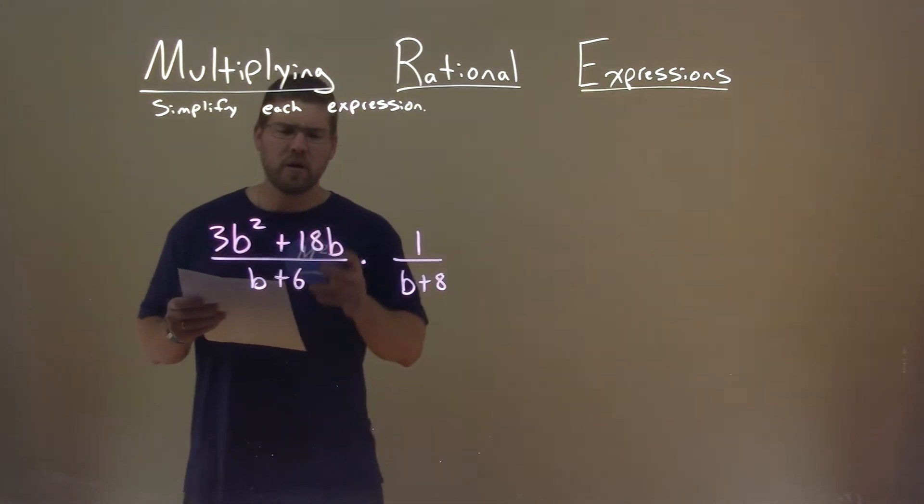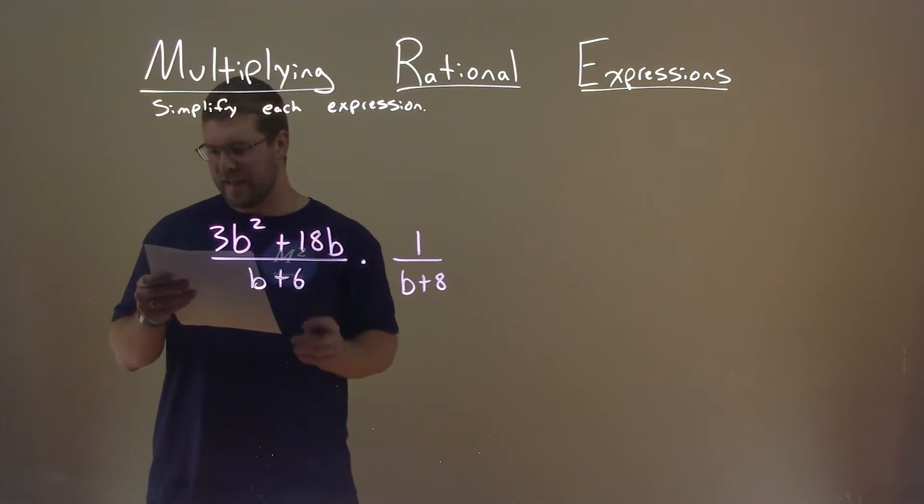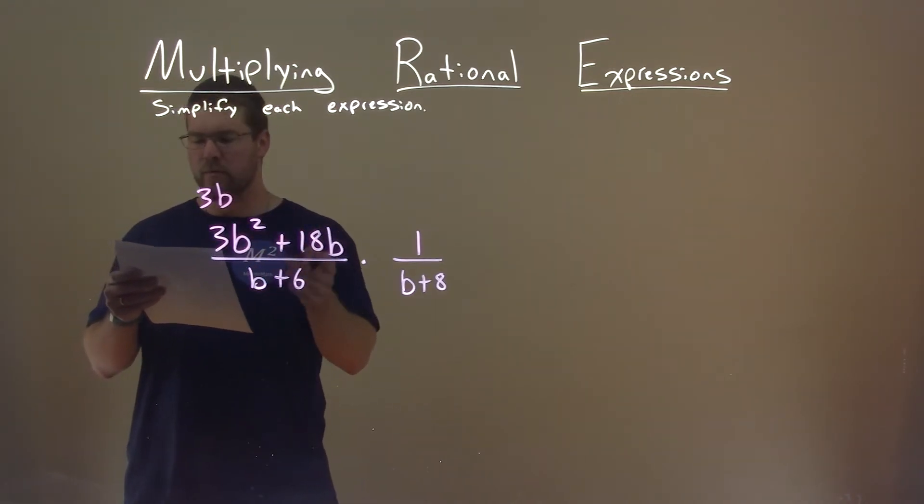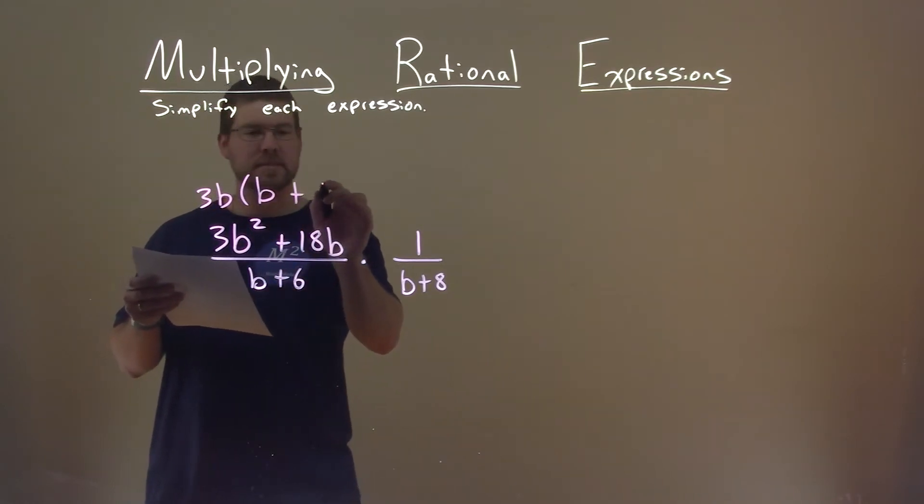Let's look at our numerator right here, 3b squared plus 18b. I can pull out a 3 as well as a b from both parts. What am I left with? That's just b plus 6.